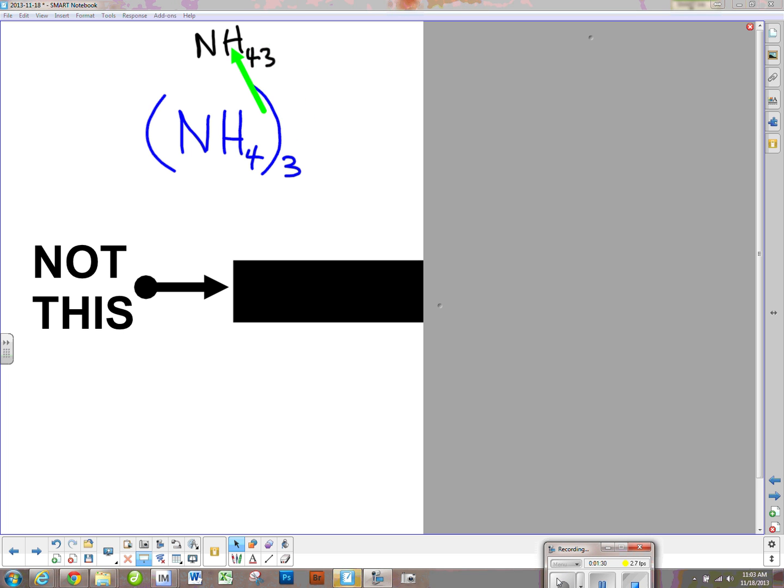And in chemistry, we would call that 43 hydrogens and 1 nitrogen, where when we put a parenthesis around the whole group, that 3 is 3 times 4 and 3 times 1, there's no subscript here, but it's 1 if it's not written, and so that would make it 3 nitrogens and 12 hydrogens.